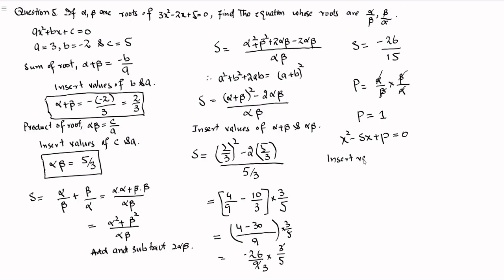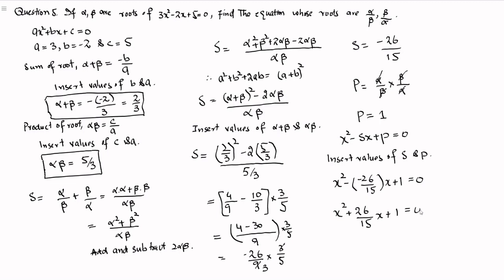Inserting the values of S and P: x squared minus of minus 26 by 15 times x plus 1 is equal to 0. Since minus multiplied by minus is plus, we get x squared plus 26 by 15 x plus 1 is equal to 0. To get rid of the denominator, multiply both sides of the equation by 15.